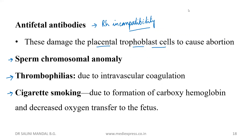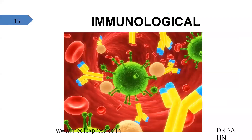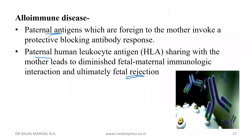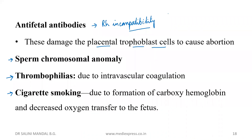These were the etiological factors of abortion: immunological ones include autoimmune disease, alloimmune disease, anti-fetal antibodies, sperm chromosomal anomaly, thrombophilias, and cigarette smoking. Apart from these, arsenic, lead, and formaldehyde also increase the risk of abortion. Even hair dyes, television exposure, and flying in airplanes during pregnancy are said to carry an increased risk.